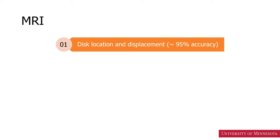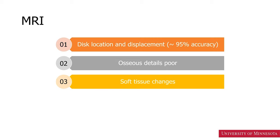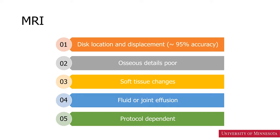MRI can provide excellent information about the disc location and displacement with about 95% accuracy. The osseous details are poor, although you can get some bony information. Soft tissue changes including fluid accumulation is excellent on an MRI. Fluid and joint diffusion are excellent. The limitation of an MRI image is that it's protocol dependent.